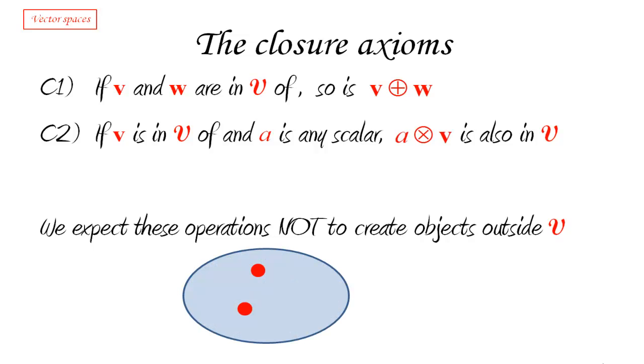So if you think of this big ellipse as the set of all objects I'm considering, and if I pick two of them in this set and I add them up according to my operation, I don't want to go outside of that set V. What I want to do is I want to make sure that my operation leads me still to another object which is within that set. Same idea for the scalar product. Once I take a vector and I multiply by a scalar according to my multiplication, I have to come up with something else which is in there. And that's why these are called the closure axioms. We want to make sure that our set is closed, that it's not open to the possibility of us taking two elements and obtaining something which is outside of it.